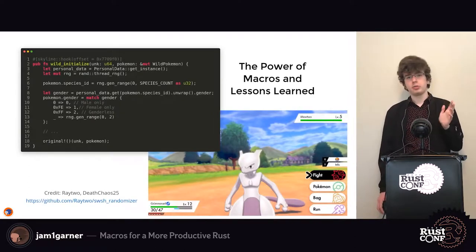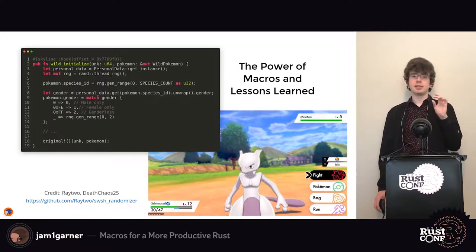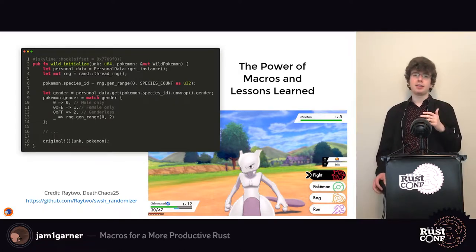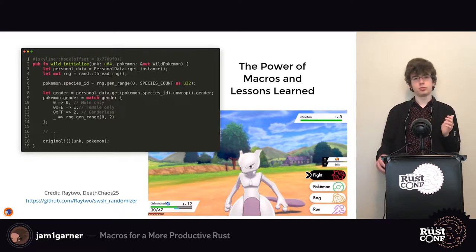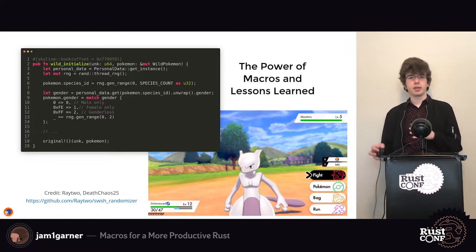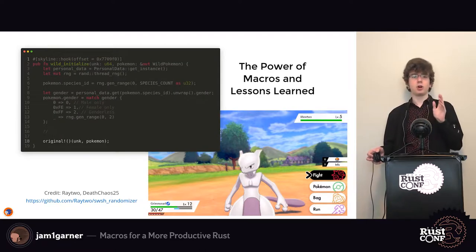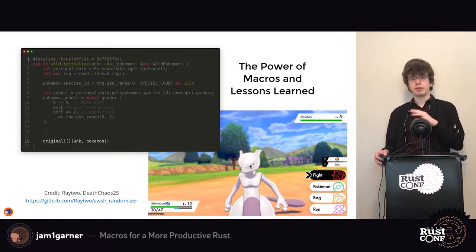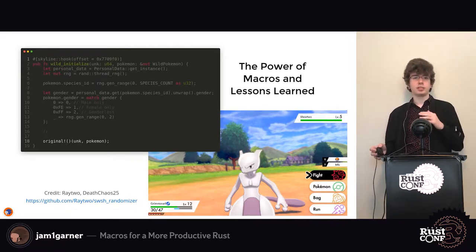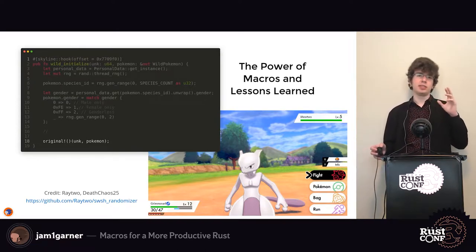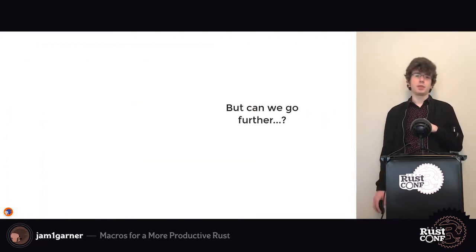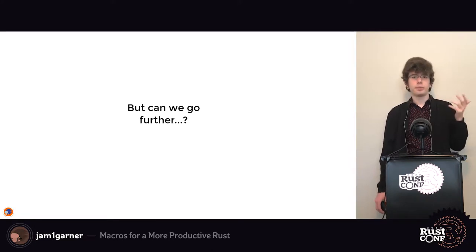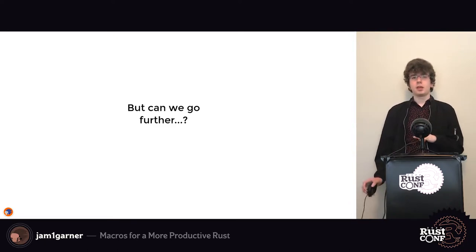Here's an attribute macro I wrote called skyline-hook. It allows you to replace a function in another binary with your Rust function — you provide a program counter, provide your function, and it handles all the code patching in the background. It even lets you call the original function if you just want to modify some input variables and defer to the original. Someone used this to make a Pokémon randomizer in about 50 lines, just randomizing some values in an overridden function, with the attribute macro handling all the code patching.